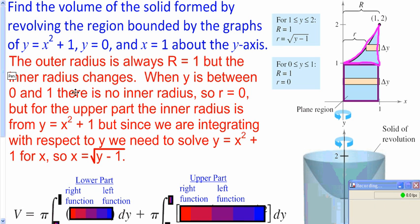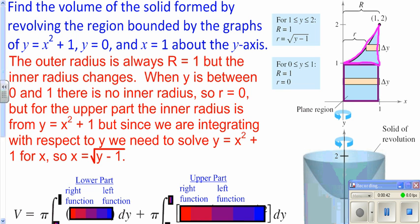As we do it in two parts, we're going to look at the bottom part, then we'll look at the top part. Since we're revolving around the y-axis, we have to have everything solved for x. You're going to have to solve that for x, and when you get it solved for x, you get this right here.